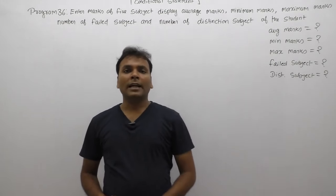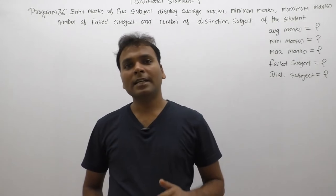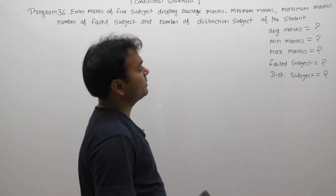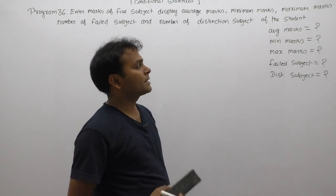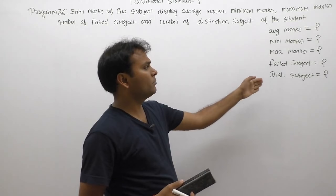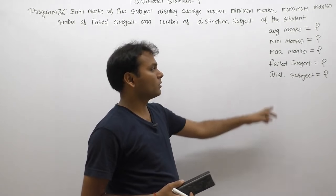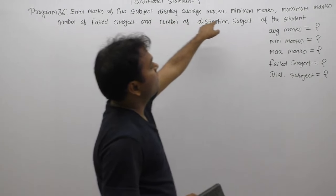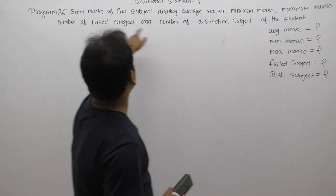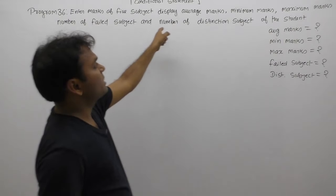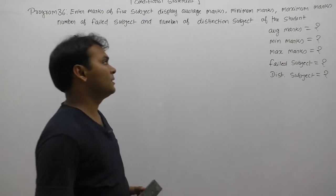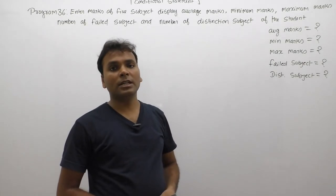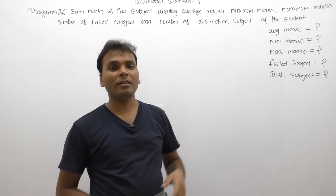In this example, enter marks of five subjects and display different informations: average marks of the student, minimum marks, maximum marks, failed subjects, and total number of failed subjects and total number of distinction subjects. There are five outputs total with respect to five subject marks as inputs.